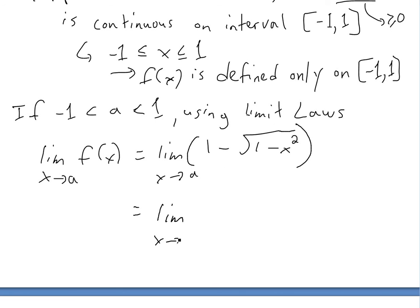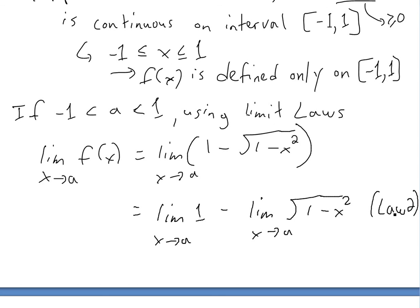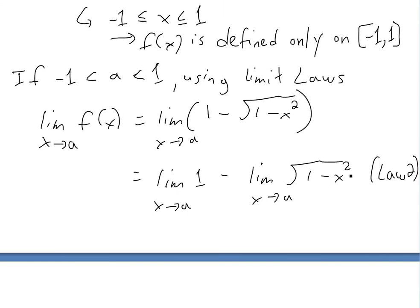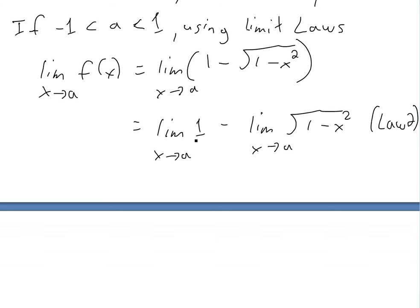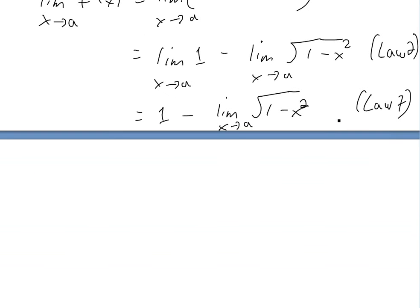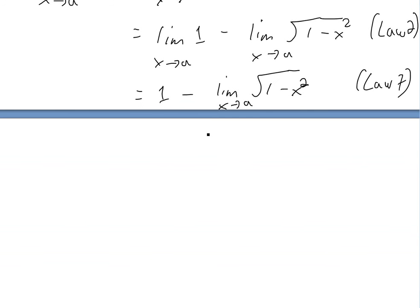This breaks into: the limit as x approaches a of 1, minus the limit as x approaches a of √(1 - x²). This is law 2, the difference law — when you have a difference you break it up. The first part is a constant, so that equals 1. Then applying law 11, the square root law, the limit can go inside the square root: minus √(limit as x approaches a of (1 - x²)).